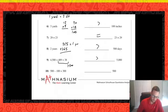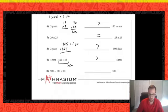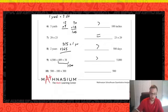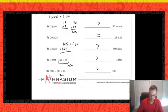Number ten: 500 minus 100 plus 300 compared to 500. Five hundred minus 100 is 400, then adding 300 gives 700, which is greater than 500.